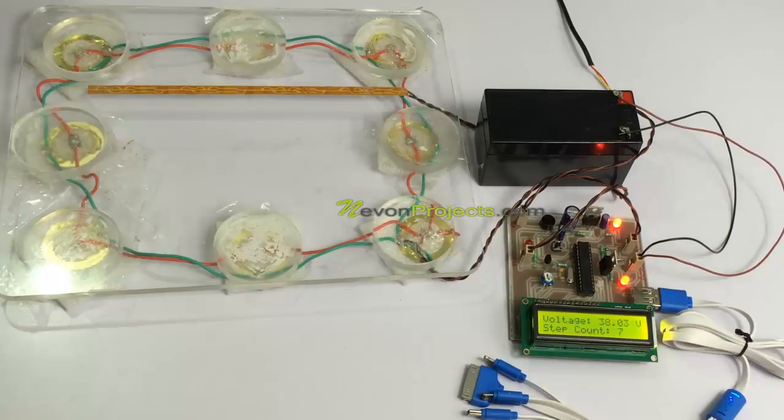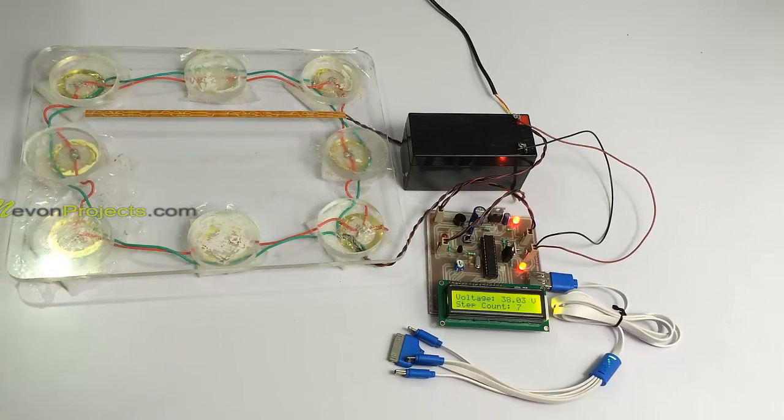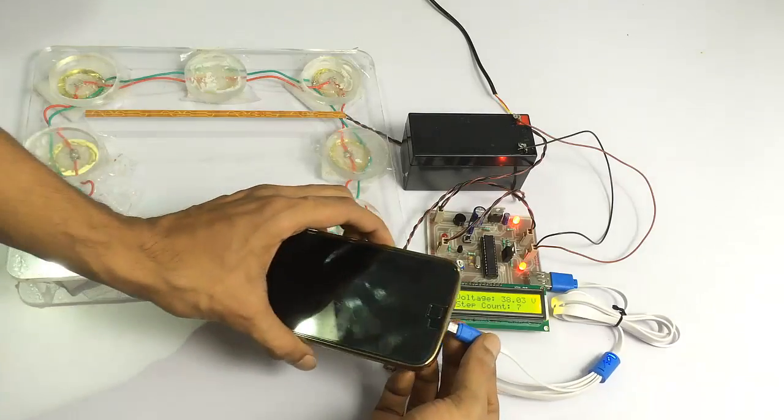And this voltage as you can see here, it may also go above 35 volts depending on how you press. This voltage and the power generated is provided to the battery. And the battery is then used to charge through the USB port as you can see here when we connect the mobile phone here.